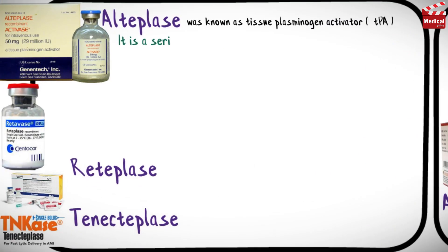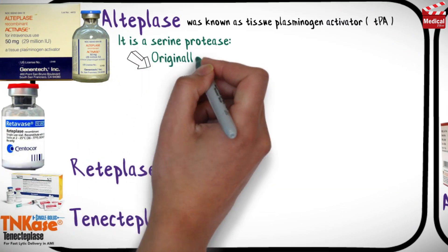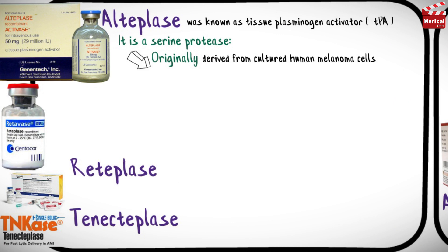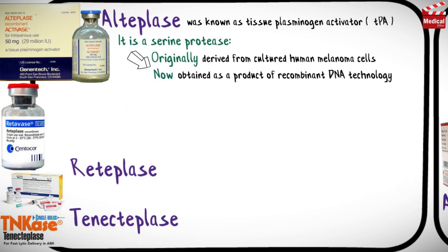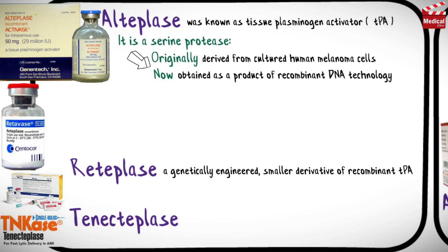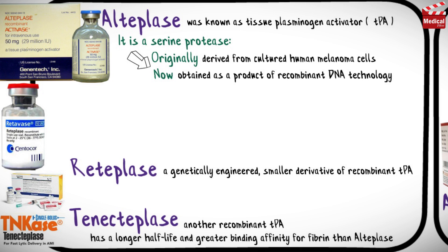Alteplase is a serine protease that was originally derived from cultured human melanoma cells, but it is now obtained as a product of recombinant DNA technology. Reteplase is a genetically engineered, smaller derivative of recombinant tissue plasminogen activator. Tenecteplase is another recombinant tissue plasminogen activator that has a longer half-life and greater binding affinity for fibrin than alteplase.